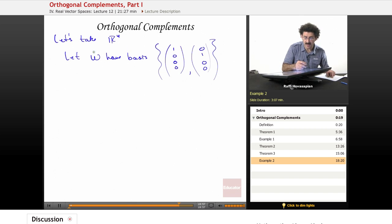So let's say that W is the subspace that has these two vectors as a basis. So it's a two-dimensional subspace.